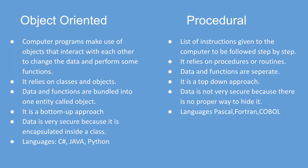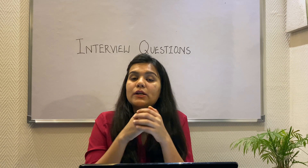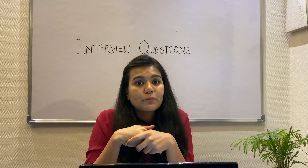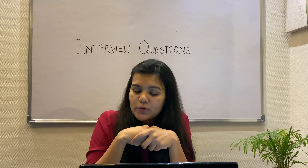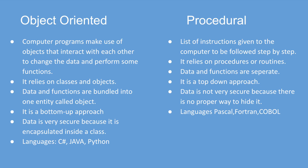In object-oriented programming, the data is very secure because it is encapsulated in a class. But in procedural programming, the data is not so secure because we don't have any proper way to hide it. Languages that use OOP are C#, Java, Python, etc., while languages built on procedural programming were Pascal, Fortran, and COBOL.